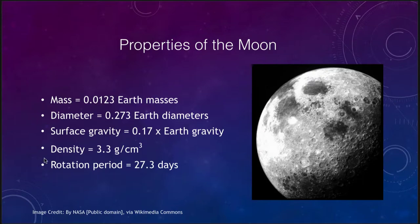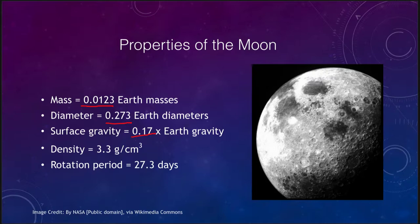What do we know about the moon? Well, its mass is much less than that of the earth — a little over one one-hundredth the mass. Its diameter is a little more than a quarter of an earth diameter. Its surface gravity is only about seventeen percent that of earth, so you would weigh a lot less on the moon. That's why images of the astronauts look like they're bounding around even though they're carrying several hundred pounds of equipment — the surface gravity is so low that it is very easy for them to move.